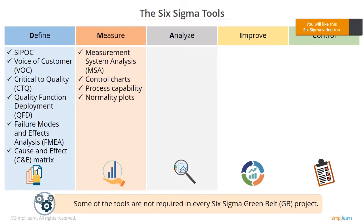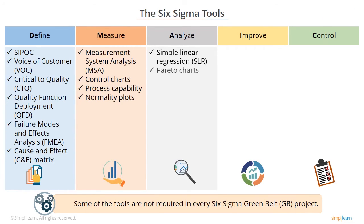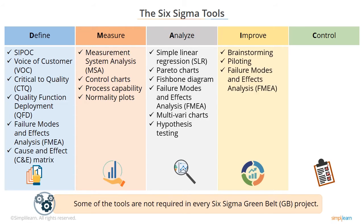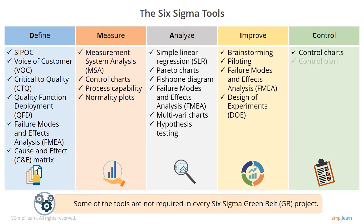In the Analyze phase, we use Simple Linear Regression (SLR), Pareto Charts, Fishbone Diagram, Failure Modes and Effects Analysis (FMEA), Multivariate Charts, and Hypothesis Testing. In the Improve phase, we use Brainstorming, Piloting, Failure Modes and Effects Analysis, and Design of Experiments (DOE). In the Control phase, we use Control Charts, a Control Plan, and Measurement System Analysis.